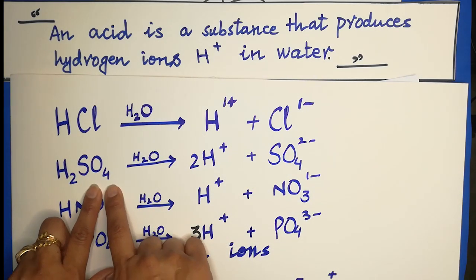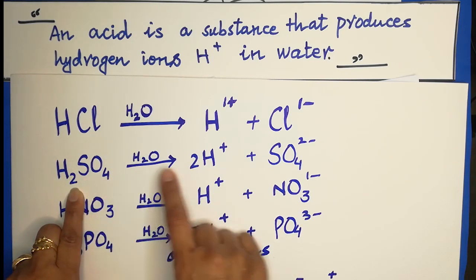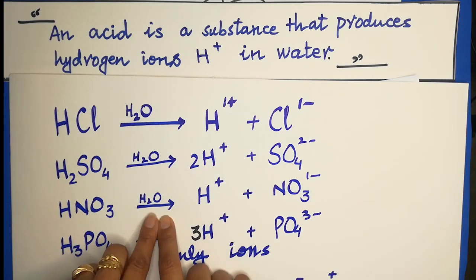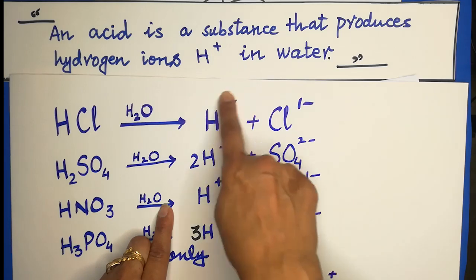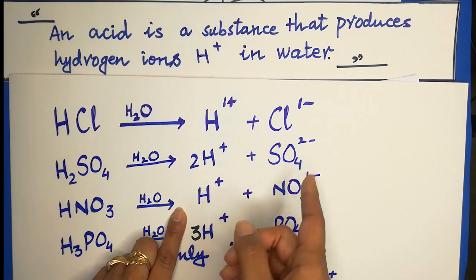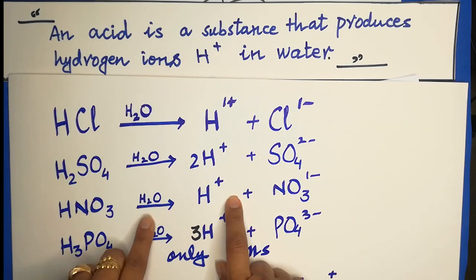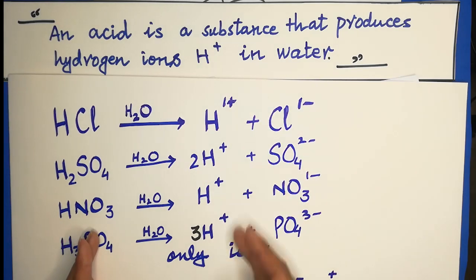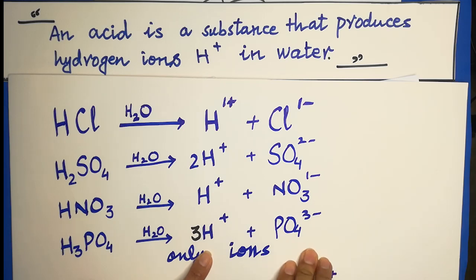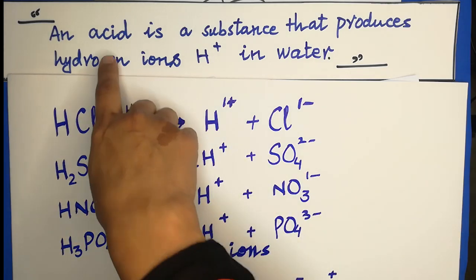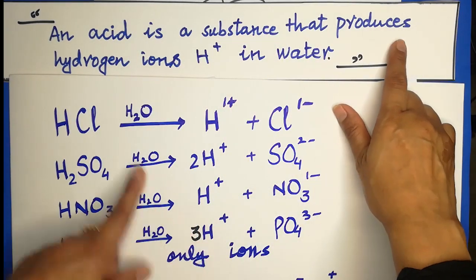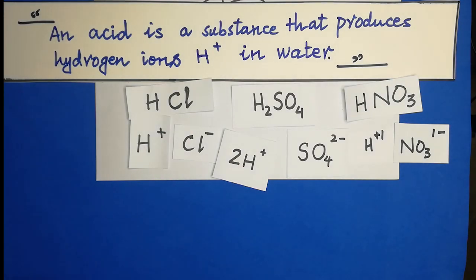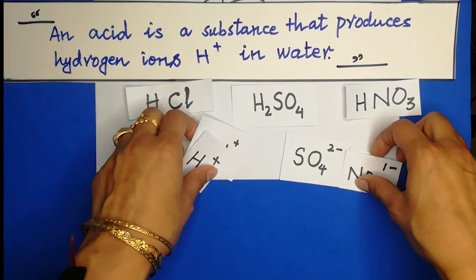Sulfuric acid, H₂SO₄, has two hydrogen ions in its formula and produces two hydrogen ions in solution, dissociating into sulfate ions. Nitric acid also produces hydrogen ions when dissolved in water. Phosphoric acid produces three hydrogen ions in water and phosphate ions are separated. All acids share one common character — the production of hydrogen ions in aqueous solution. So this is the second definition of acid.